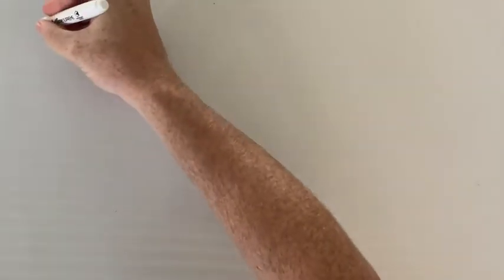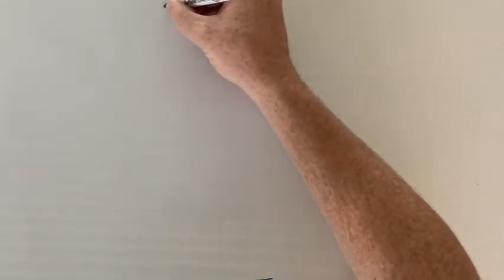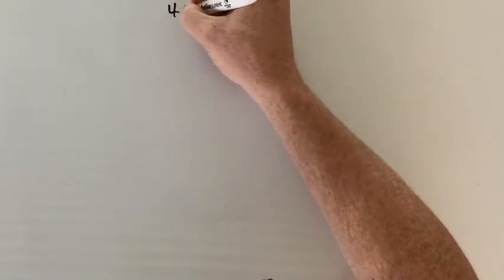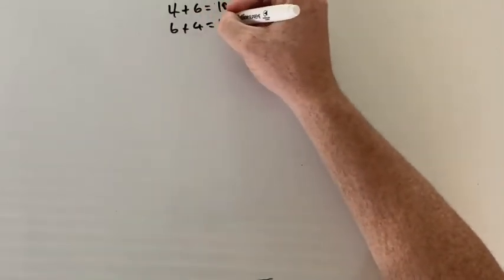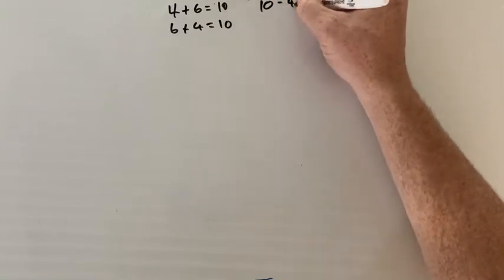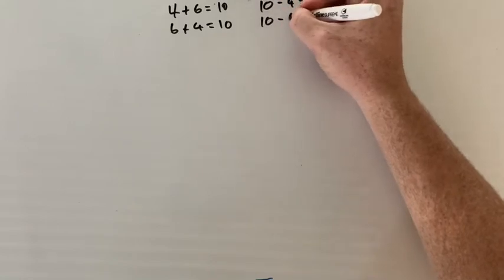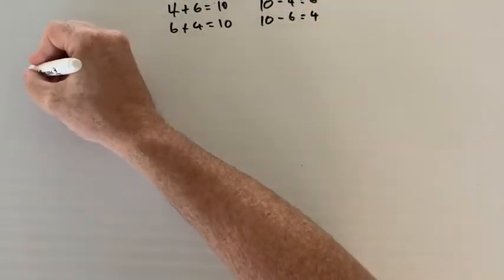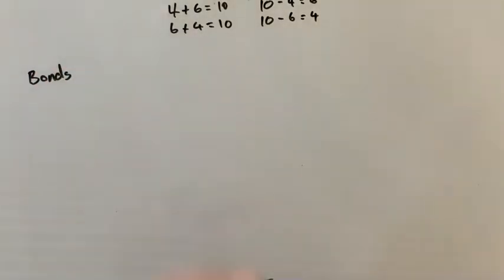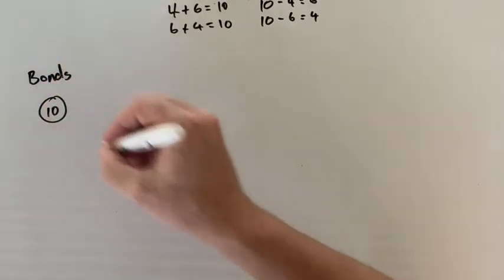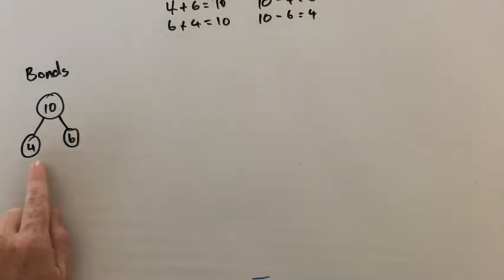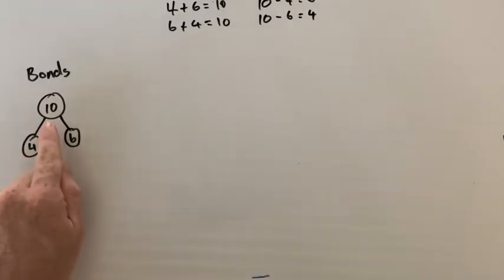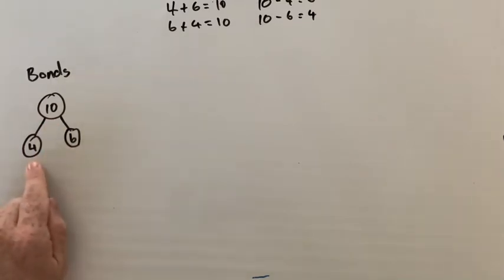Once you've built up that understanding, you can write: 4 plus 6 equals 10, 6 plus 4 equals 10, 10 take away 4 equals 6, 10 take away 6 equals 4. The first way we can show this is using number bonds — showing that 10 is at the top, one part is 4, the other part is 6. 4 plus 6 is 10, 6 plus 4 is 10, 10 take away 4 is 6, 10 take away 6 is 4. So we can see that relationship.